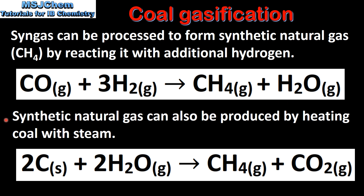Synthetic natural gas can also be produced by heating coal with steam. In this reaction, we have coal, which is carbon, being reacted with steam to produce methane and carbon dioxide.